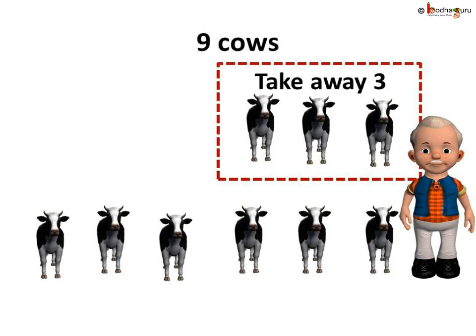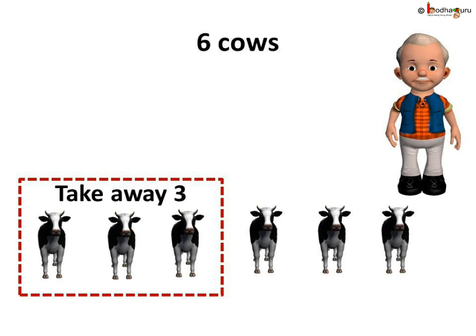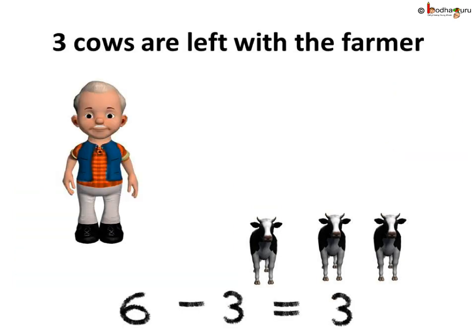Now let us take out three cows again — one for each brother. Now, 9 minus 3 equal to 6, so 6 cows are left with the farmer. Let us take out another set of three cows — one for Magan, one for Chaman, and one for Gagan. Now, 6 minus 3 is equal to 3.